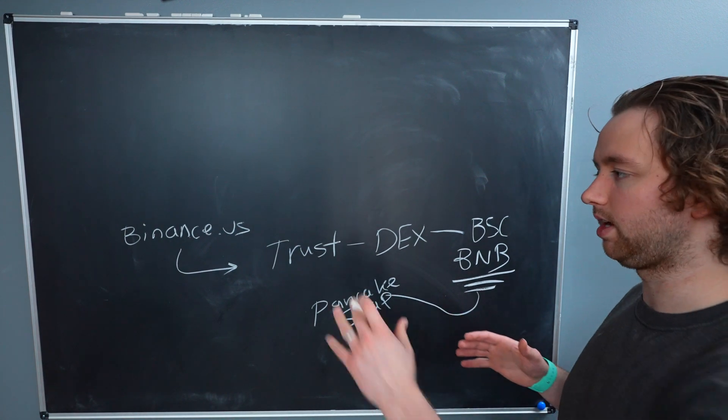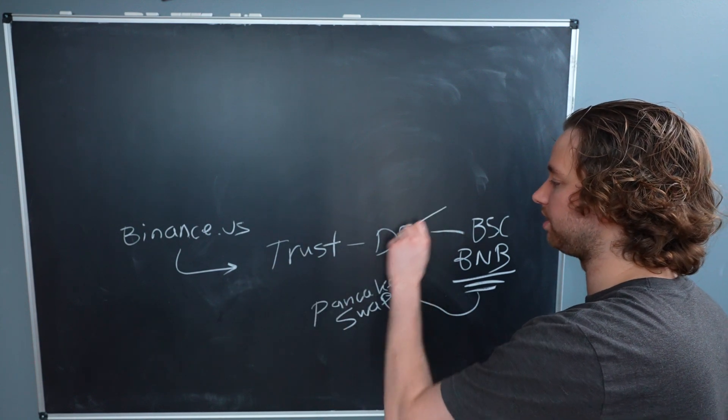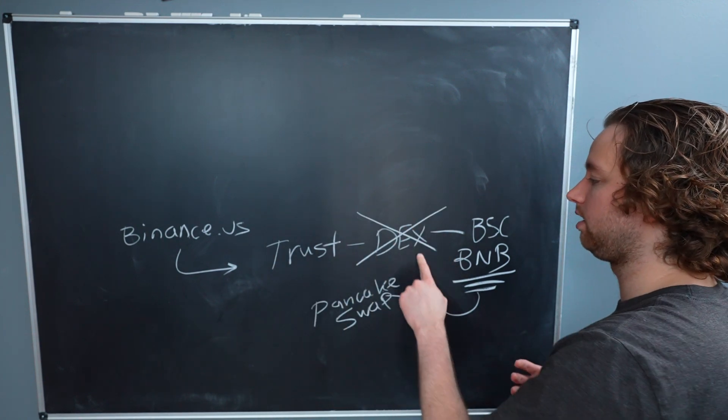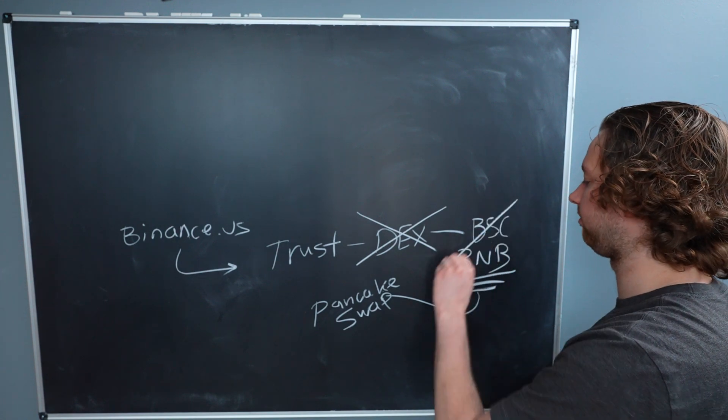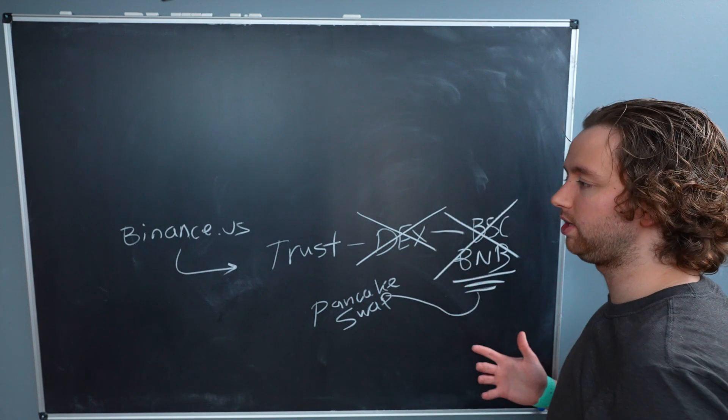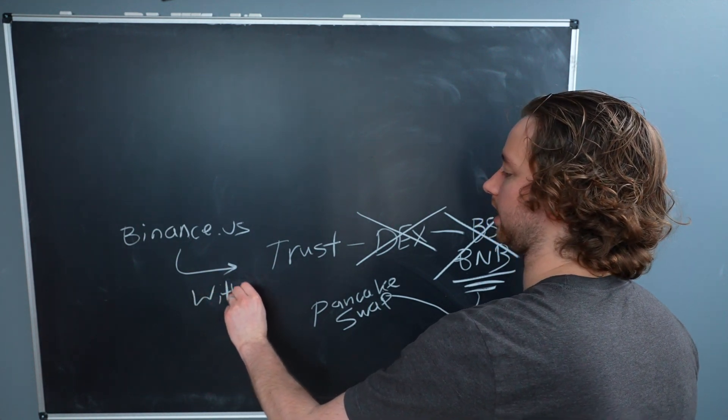So ideally in the next few months or next year or really soon, we can basically skip this process where we don't need that decentralized exchange. And we just automatically have Binance Smart Chain BNB because it's an option when we withdraw from Binance.us.